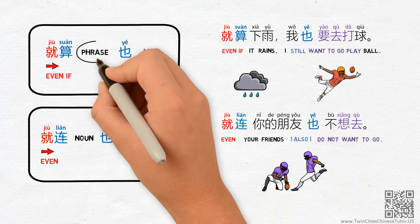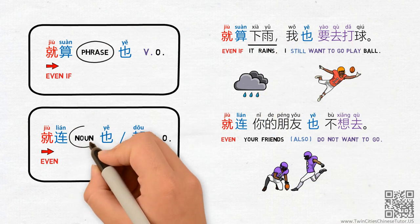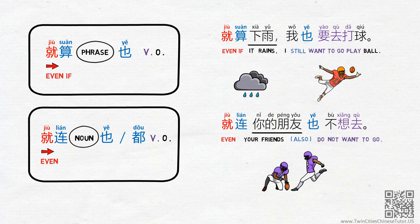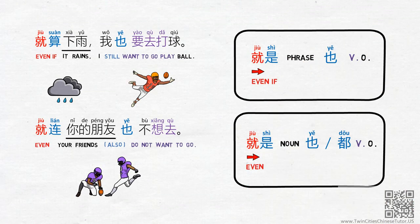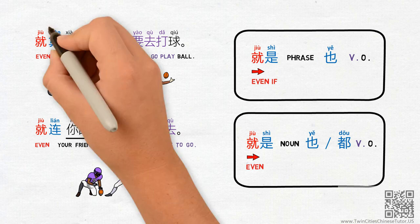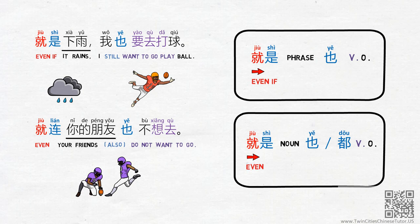Please note that while a phrase follows jiusun and a noun follows jiulian, they are not interchangeable. However, there is another phrase that can replace them both — that phrase is jiushi. Oddly, jiushi can be used as a conjunction to convey both 'even' and 'even if.' So the sentences can be turned into: 就是下雨我也要去打球 and 就是你的朋友也不想去.